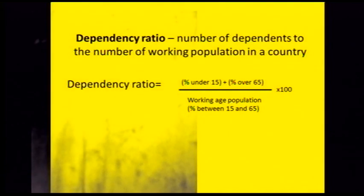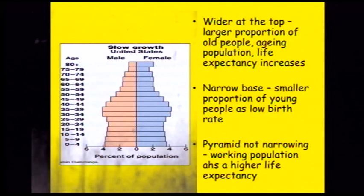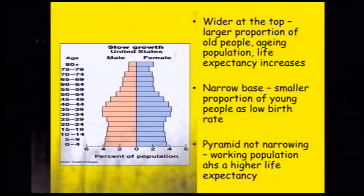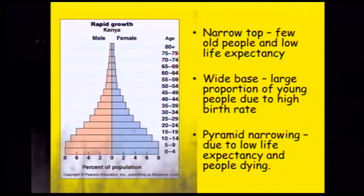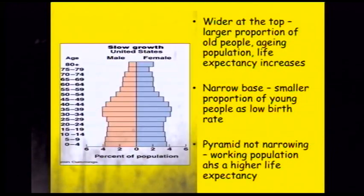The dependency ratio is the number of dependents to the number of working population in a country. In the United States, the dependency ratio is quite low because of a low birth rate, and although there are quite a few older people, the working-age population is quite large. In Kenya, the dependency ratio is much larger because there are lots of children who are dependent on a very small working-age population.